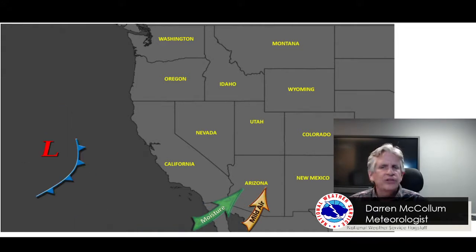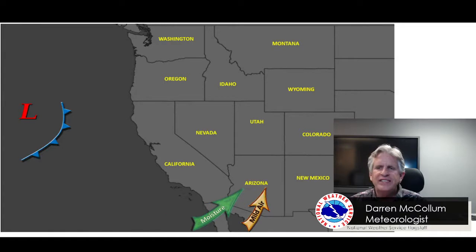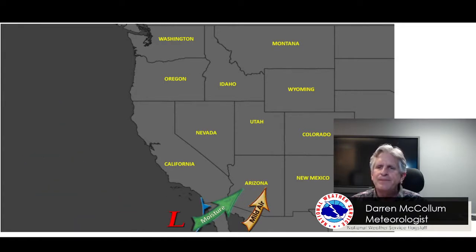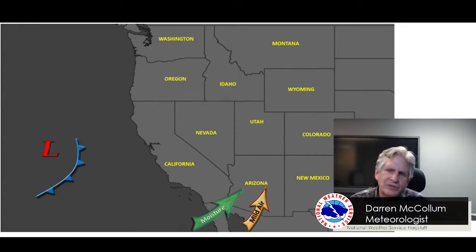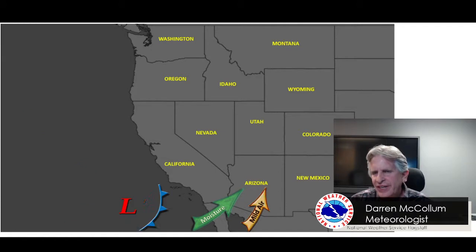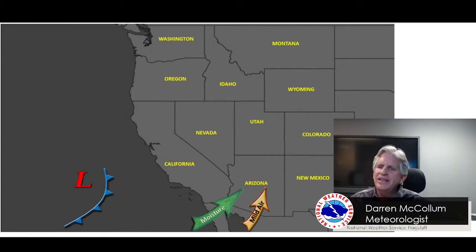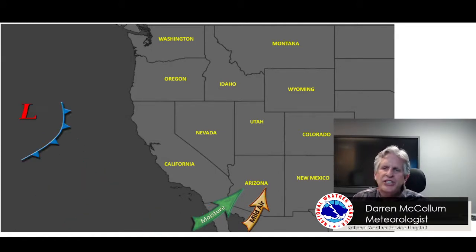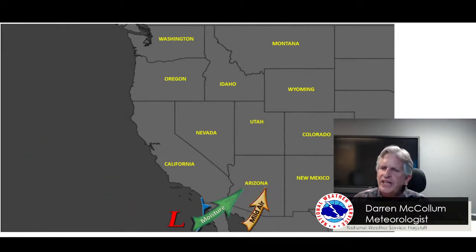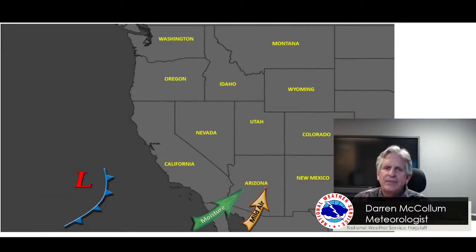So below 7,000 feet — essentially below the elevation of Flagstaff — we mostly see rain with this pattern. It can go either way at those Mogollon Rim elevations, but we typically still see mainly snow at elevations in the White Mountains, the San Francisco Peaks, and the Kaibab Plateau.